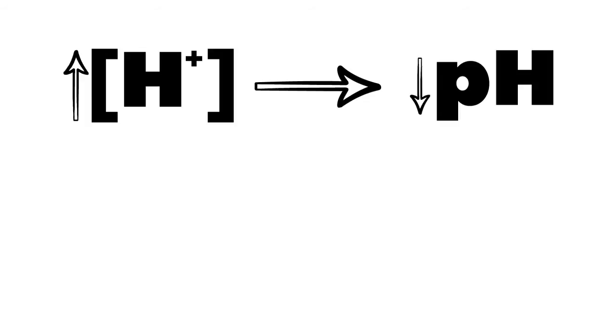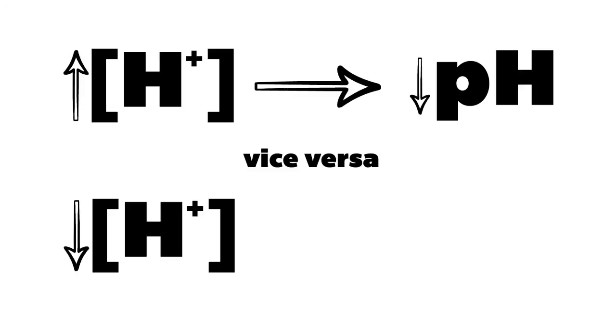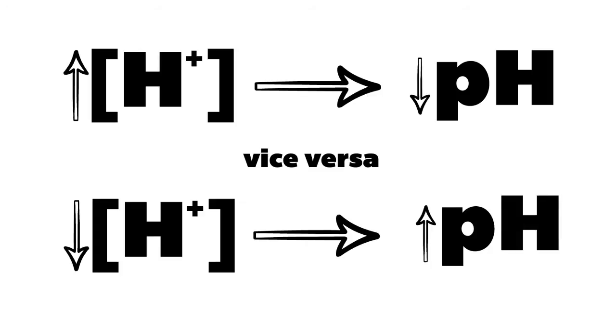It is important to remember, however, that as the concentration of hydrogen ions increases, pH will decrease, and vice versa. As the concentration of hydrogen ions decreases, pH will increase.